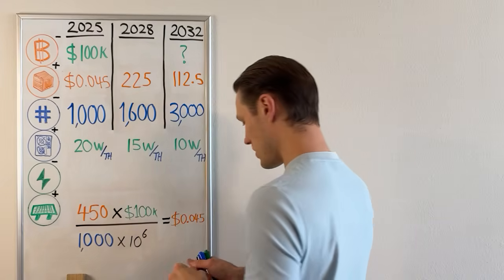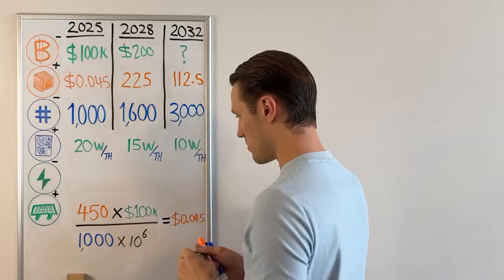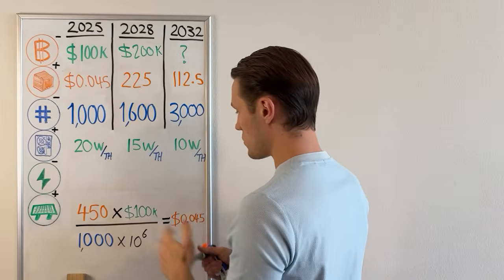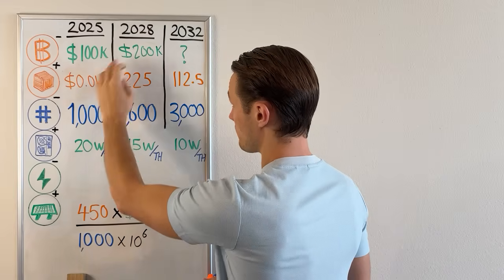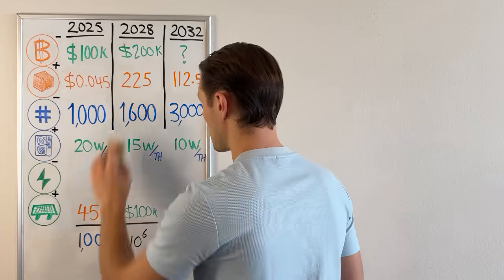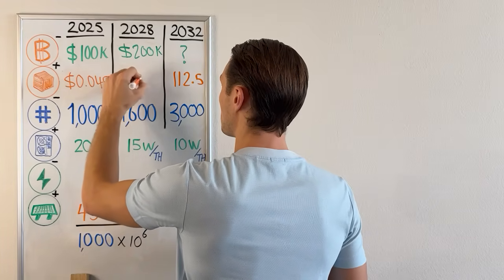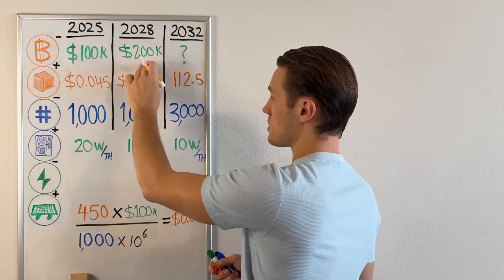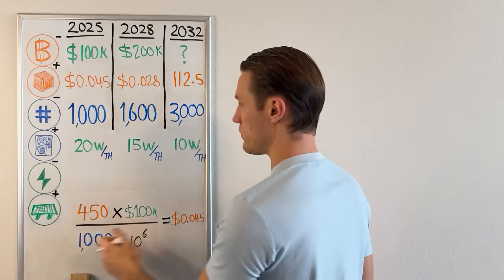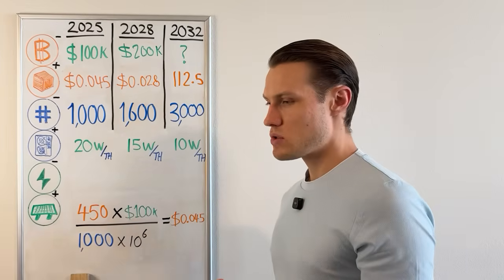For a price projection, let's write in the current hash price of 0.045. Now for the first scenario, we'll be sensible and project a Bitcoin price of $200,000. With 225 Bitcoin distributed daily and a network hash rate of 1,600 exahashes, this gives a hash price figure of 0.028 — about 2.8 cents per terahash per day. This models a roughly 60% increase in network hash rate, driven by more miners plugging in.